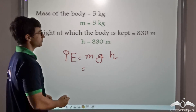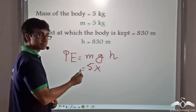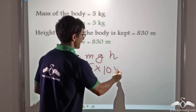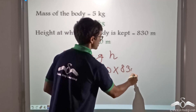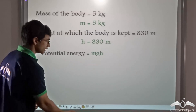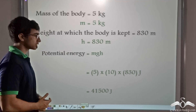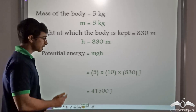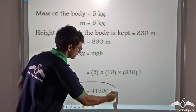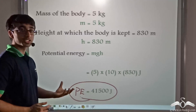We have the value of m as 5, g as 10, and h as 830. Placing these respective values into the formula, we find that the potential energy of the ball is equal to 41,500 joules.